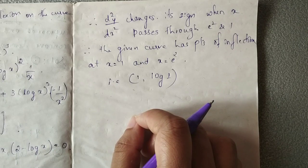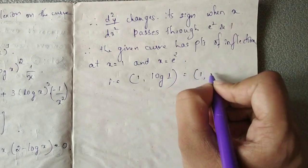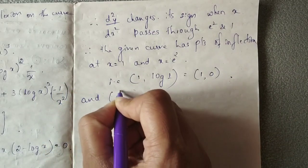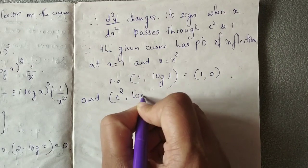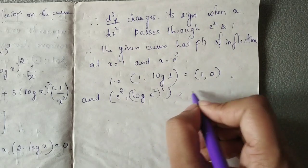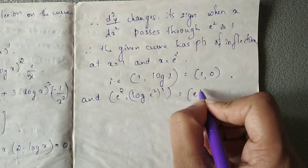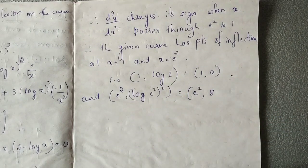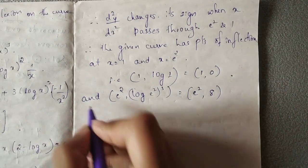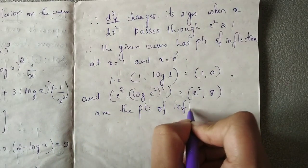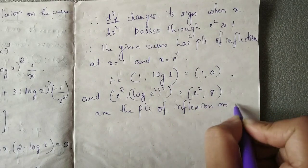Log of 1 is 0, so the first point is (1, 0). For x equal to e squared, we compute log of e squared, the whole cube, which equals 2 cubed equals 8. So the second point is (e squared, 8). These are the points of inflection on the given curve.